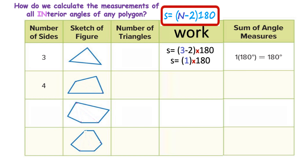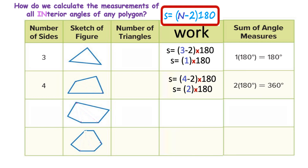When I look at a quadrilateral, I use the same formula but put a 4 where N is. The sum of all angles equals, in parentheses, 4 minus 2, times 180. Four minus 2 is 2, so 180 times 2 tells us that the angles inside any quadrilateral have to be equal to 360 degrees.